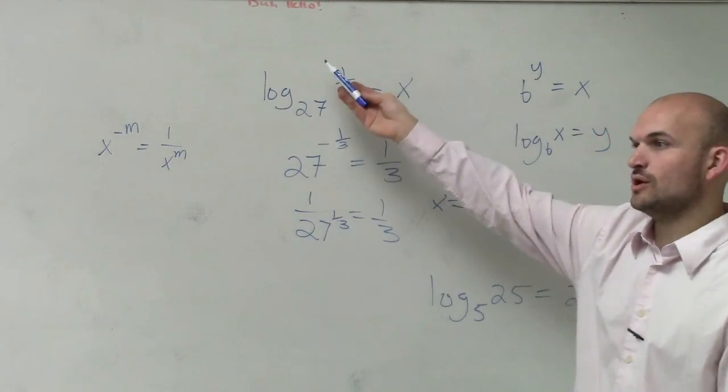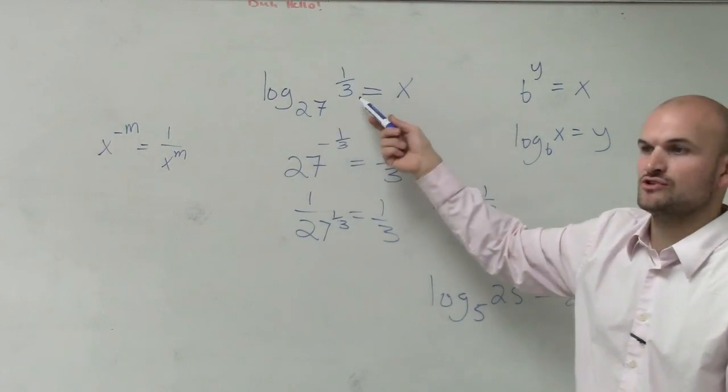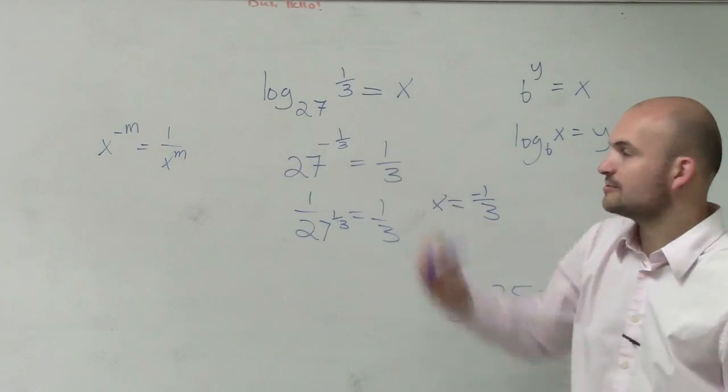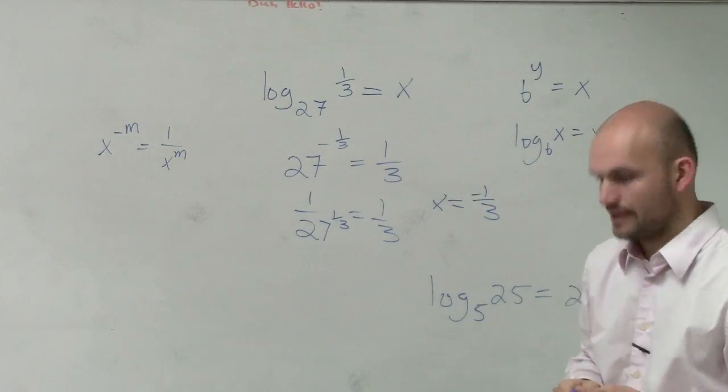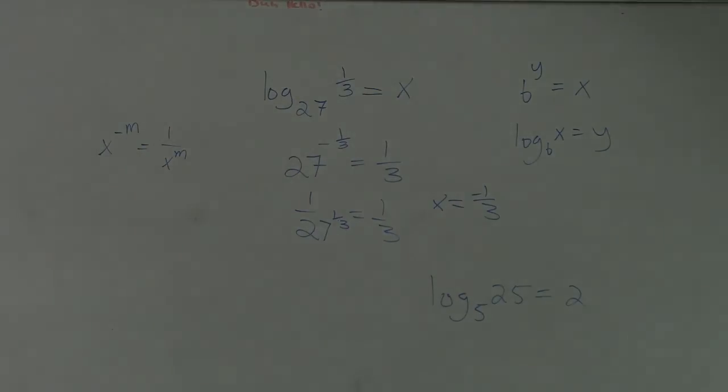27 raised to what power gives you 1/3? Well, it has to be negative. And you have to go from a larger number to a smaller number. So therefore, your exponent is going to be less than 1. So it's going to be negative 1/3. OK? So that was for that problem.